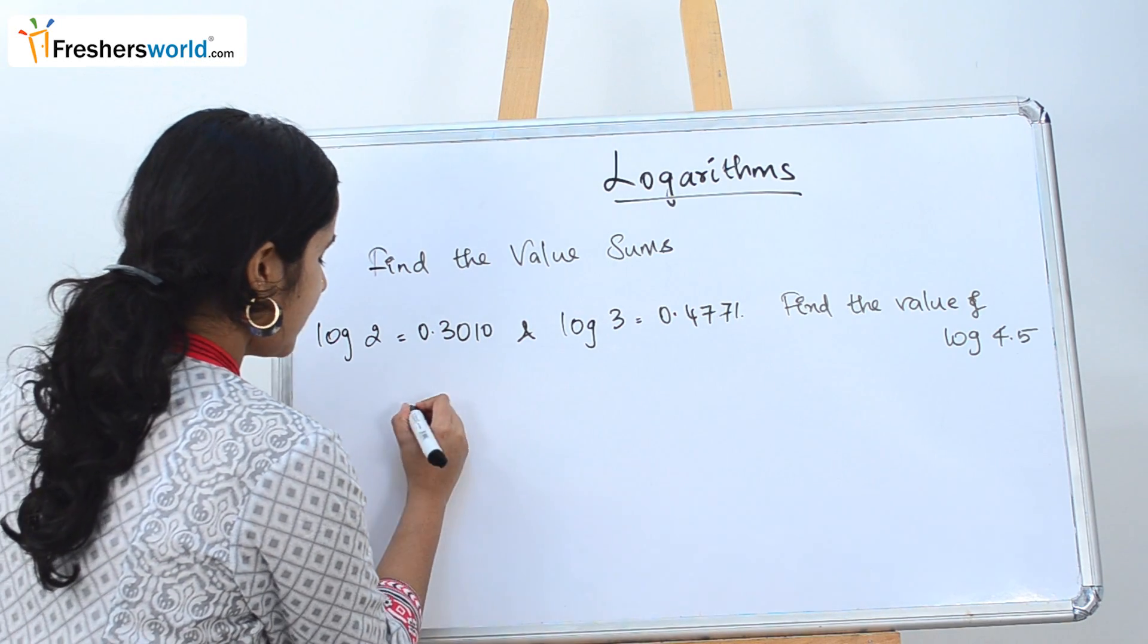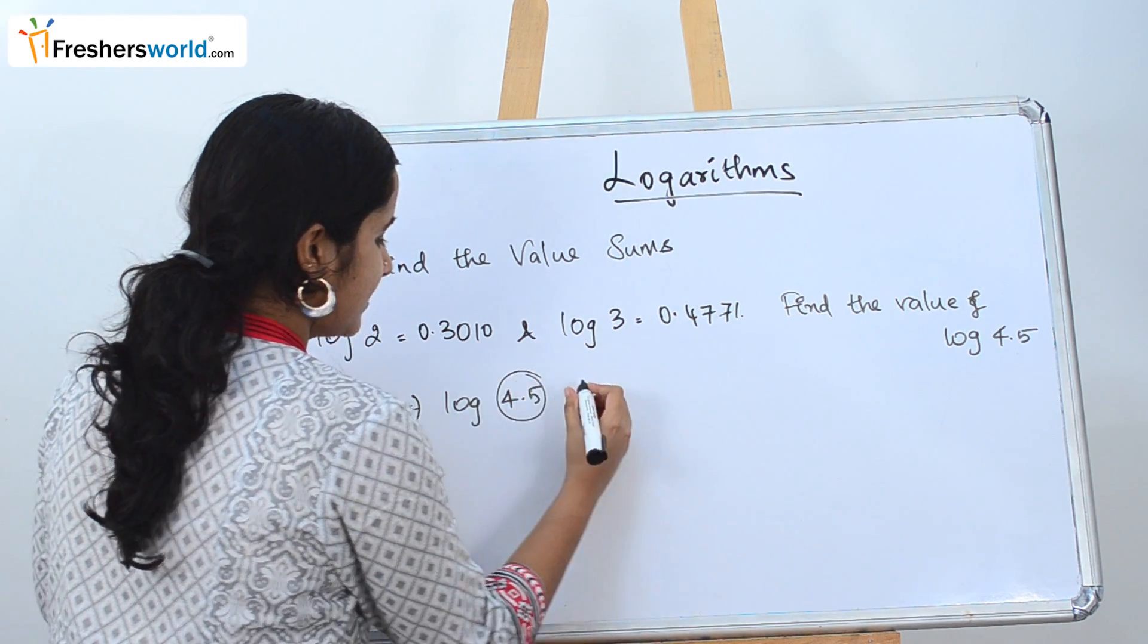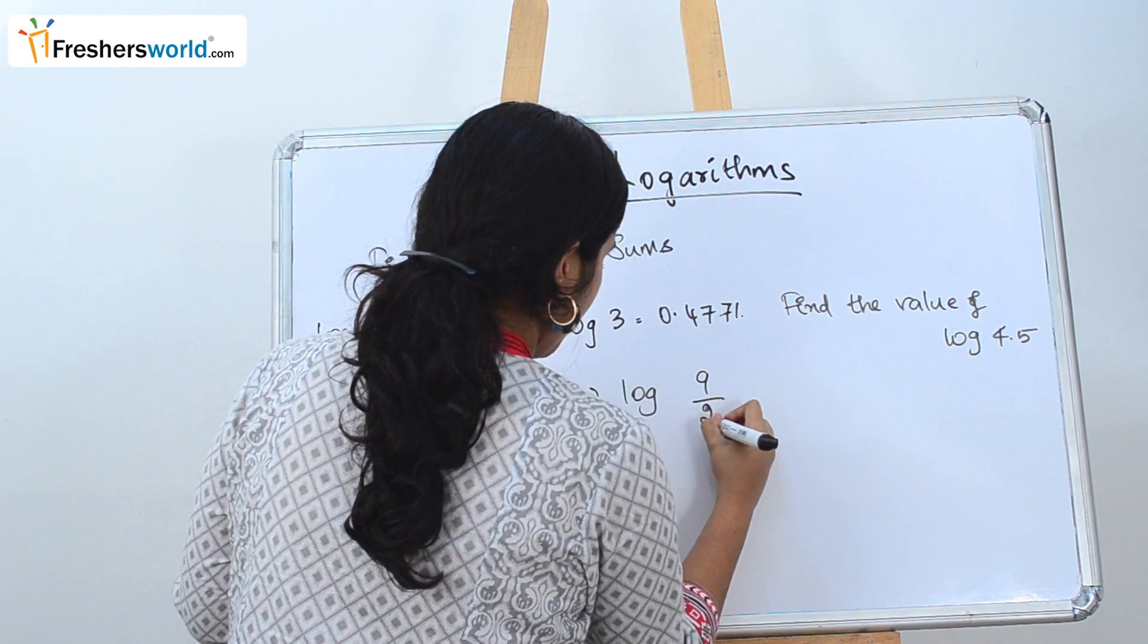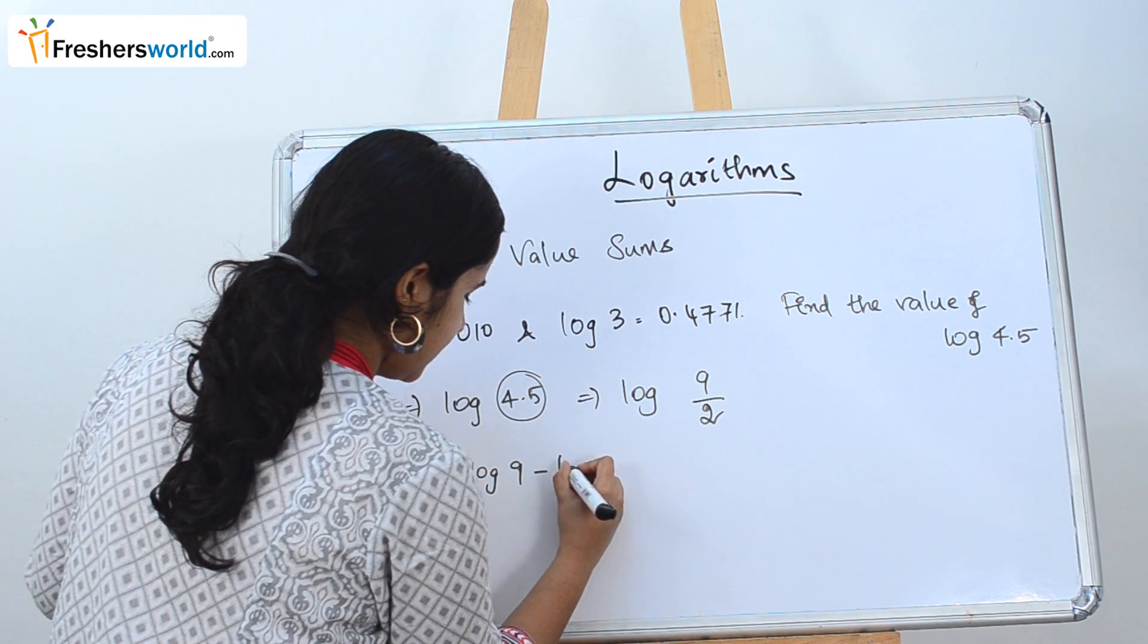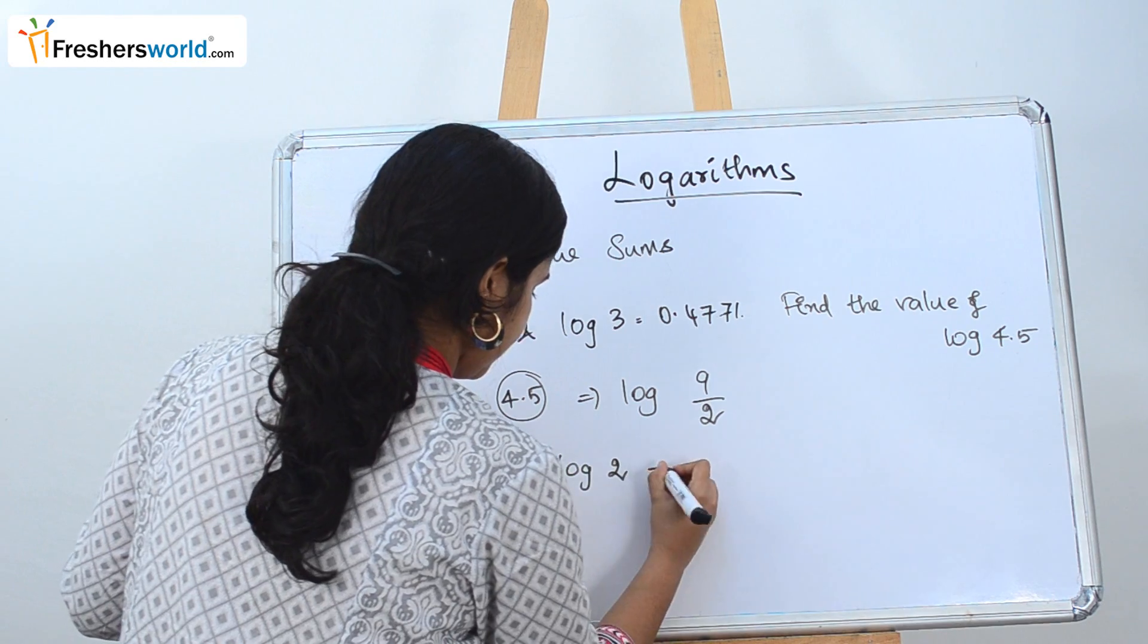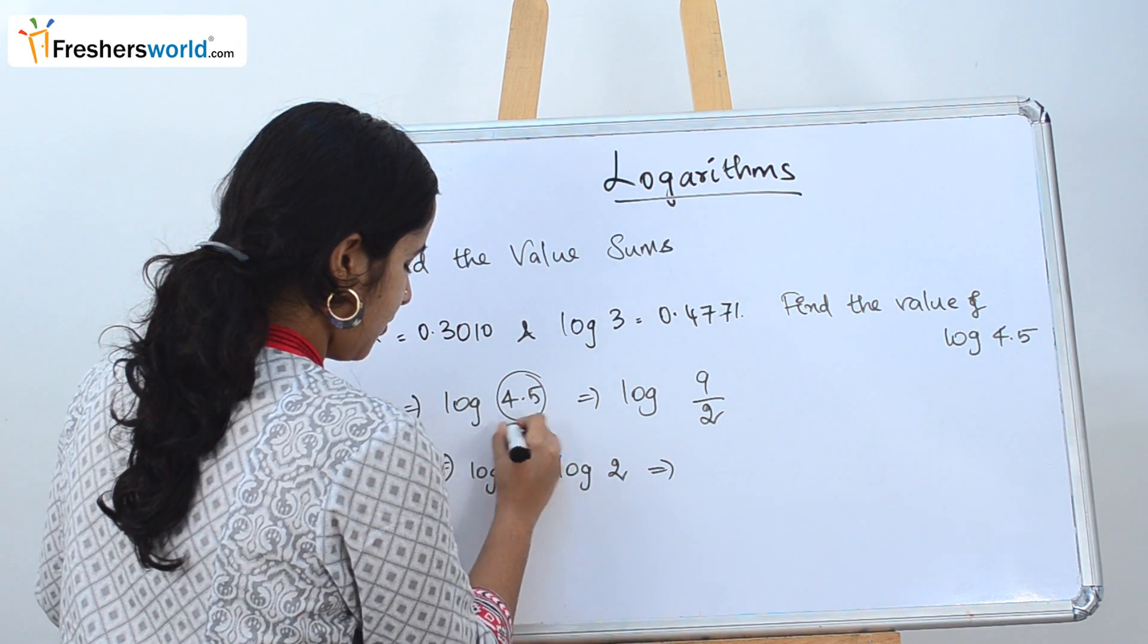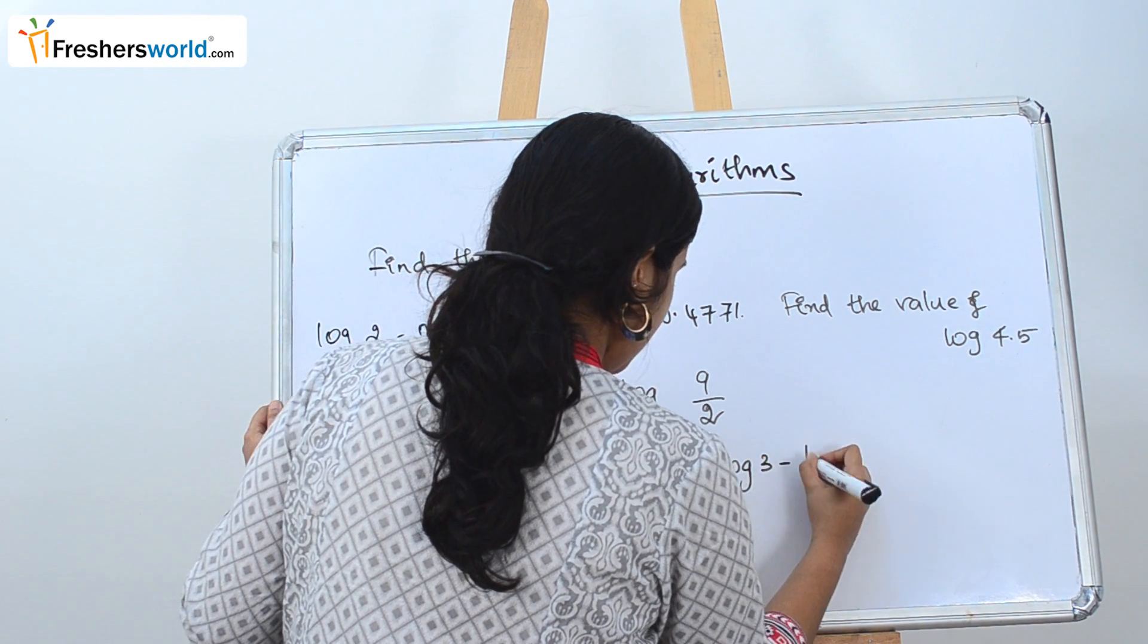So let's write the question: log 4.5. This can be rewritten as log 9 by 2, which can be written as log 9 minus log 2. Log 9 is nothing but 3 squared. So it becomes 2 log 3 minus log 2.